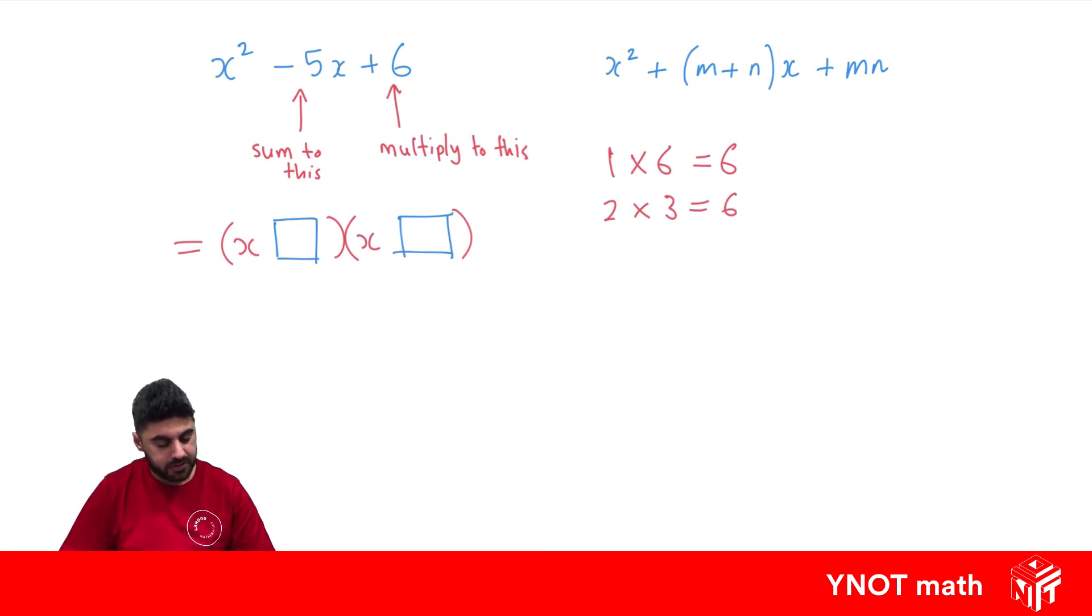What numbers can we use that are going to add up to -5? It looks like we can use 2 and 3, because 2 × 3 = 6 and 2 + 3 = 5. We just have to work out what signs we need.